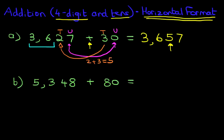Okay, this one is slightly different. 5348 plus 80. Now there is more than one way to do this. What we're going to do is break it down for each digit.